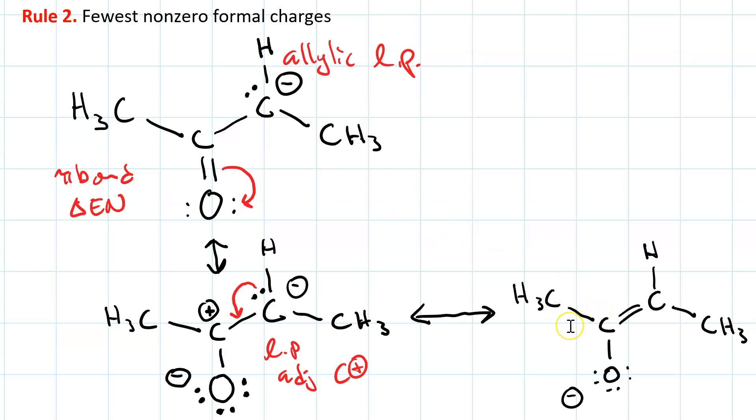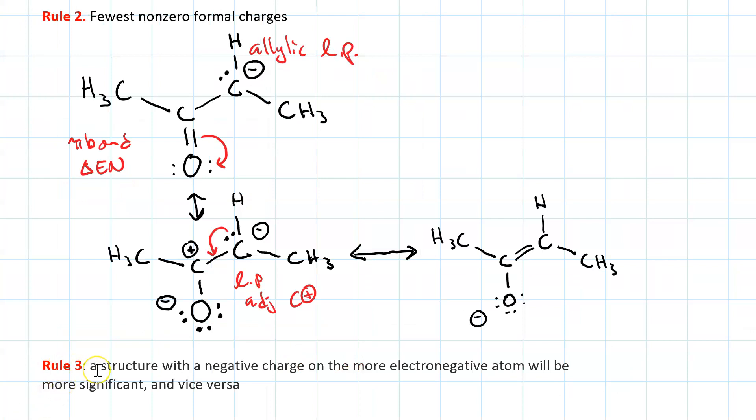How do we differentiate between the first and the third? Well, then we go on to rule number three, which says that if you're going to have a negative formal charge, it's better to put it on the more electronegative atom.